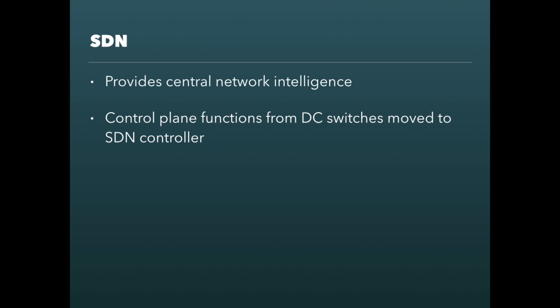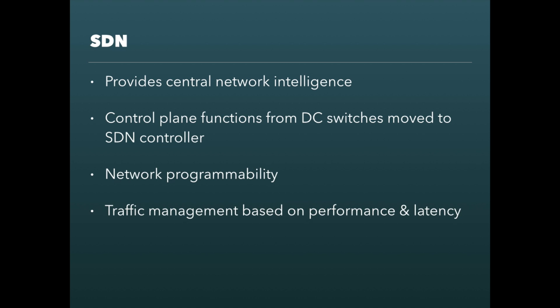Application servers on the network could use API scripts to connect with the SDN controller, which can then be used to influence how traffic flow is provisioned across the network. SDN is a solution that provides a central location for managing the network intelligence and how data flows through the network. With SDN, the control plane functions — routing, switching, management — from the network switch are moved to a centralized controller. The SDN controller can provide network programmability, traffic management based on performance or latency, faster provisioning of network services, network slicing, and network topology segments for specific applications.